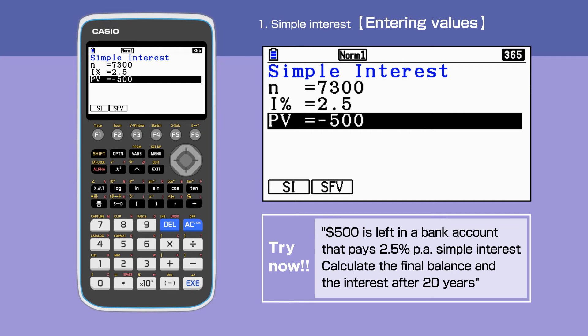As the money comes out of our pocket, do make sure to use bracket minus for negative values, in this case, the PV.